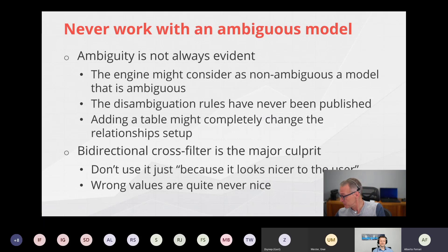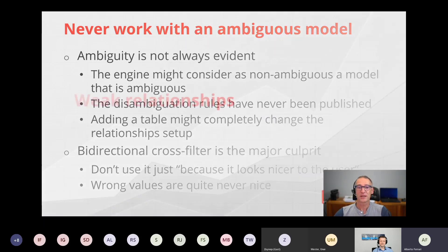In the real world, I once saw a model with bidirectional cross-filter everywhere — I'll highlight them with red dots. Every relationship was bidirectional. There is no way to tell that user what is being computed. The disambiguation rules for the engine have never been published; they are too complex. Use bidirectional cross-filter only when you have a strong, compelling reason. Otherwise stay away — it's dangerous and makes it nearly impossible to explain computed numbers to users.